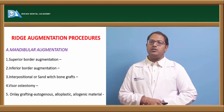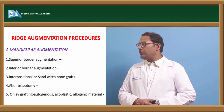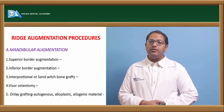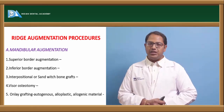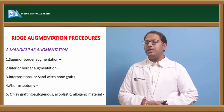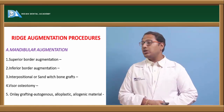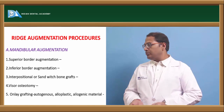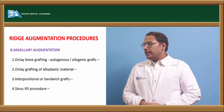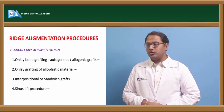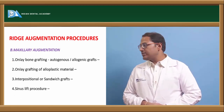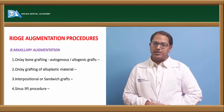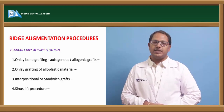Coming to ridge augmentation procedures — augmenting means adding on. For mandibular augmentation, we can add to the superior border, the inferior border, or in between using the sandwich or interpositional technique. We can also perform visor osteotomy or onlay grafting. For the maxillary arch, options include onlay bone grafting using autogenous or allogenous grafts, onlay grafting of alloplastic material, interpositional sandwich grafts, and sinus lift procedures — further classified into direct and indirect sinus lift.